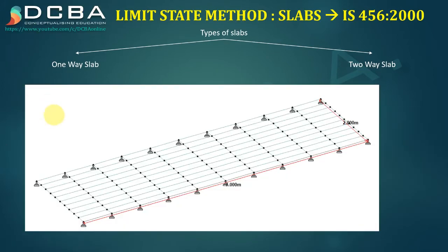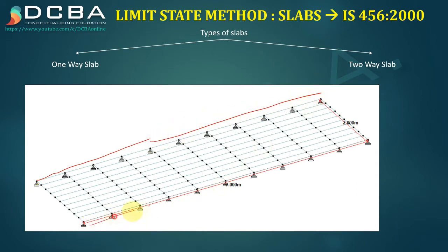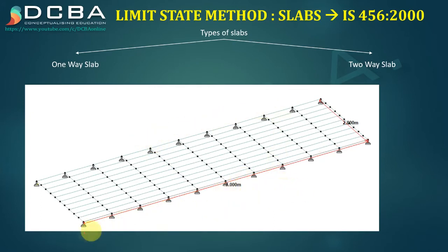To answer this, let us consider a slab modeled in StatPro. This slab is supported on two sides — two opposite beams — and has dimensions of 7 meters by 2 meters. So LY is 7, LX is 2, giving a ratio of 3.5, which is greater than 2. This is definitely a one-way slab.